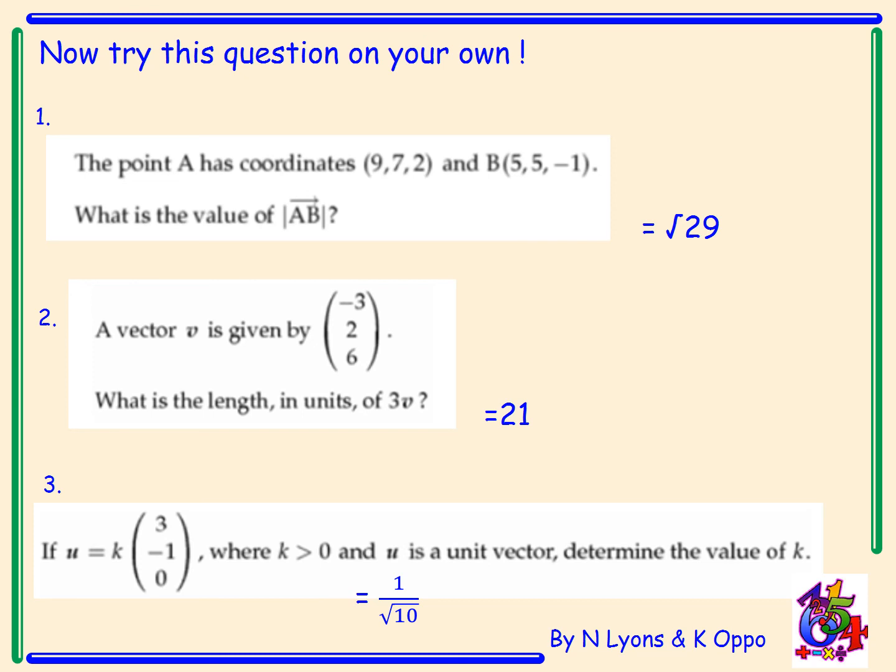Question 3, if U equals some constant K times the vector 3, minus 1, 0, where K is a constant greater than 0, it's positive, and U is a unit vector, determine the value of K. So hopefully you've worked out what the magnitude of this vector is with components 3, minus 1, 0. You should have found that the magnitude was root 10, and then the constant K is you're just dividing by that magnitude, 1 over root 10, to produce a unit vector.